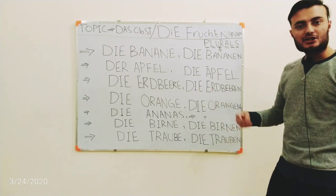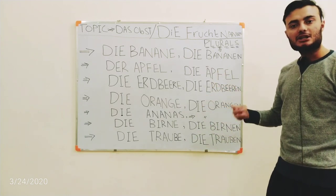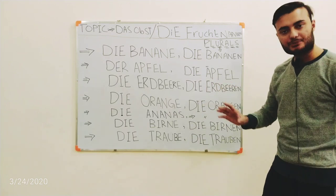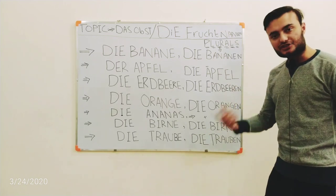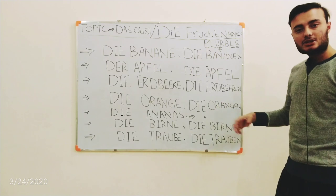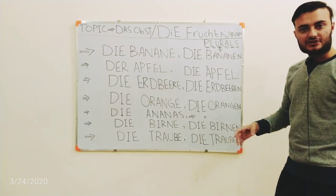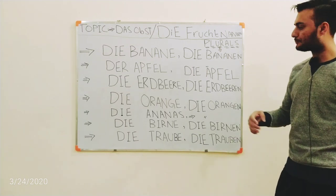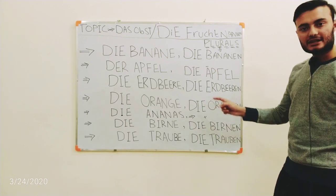Next one is 'die Orange' — the orange. The spelling remains the same as in English, just a slight tilt in the pronunciation. Its plural will be 'die Orangen.' So 'die Orange' is the orange and 'die Orangen' is the oranges.